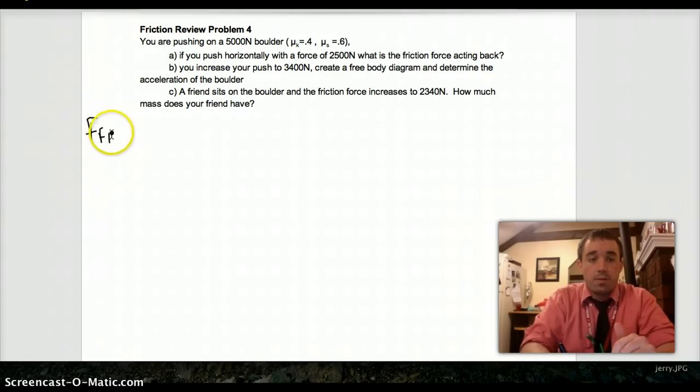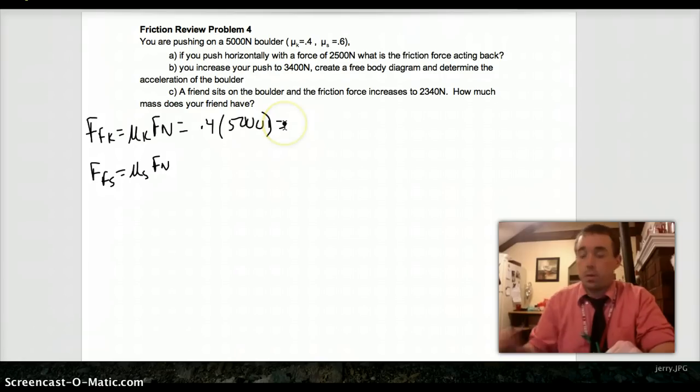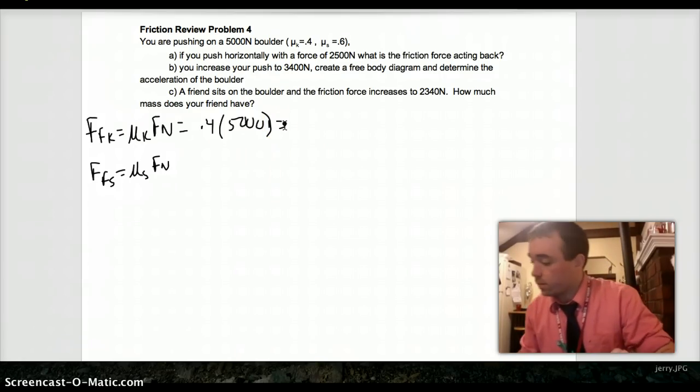So Ffk equals mu k times the normal, and simultaneously Ffs equals mu s times the normal. Mu k is 0.4. Our normal force is just going to be nothing more than 5,000 Newtons. 0.4 times 5,000 should be 2,000.